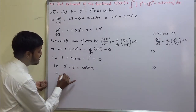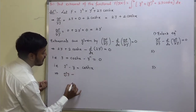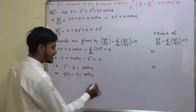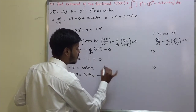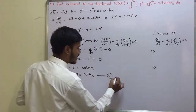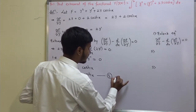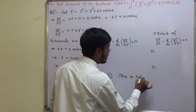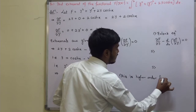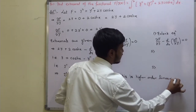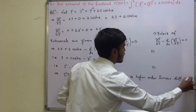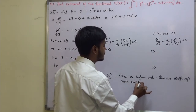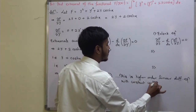This can be written as y-double-dash minus y equals cosh(x), which we call equation 1. This is a higher-order linear differential equation with constant coefficients.